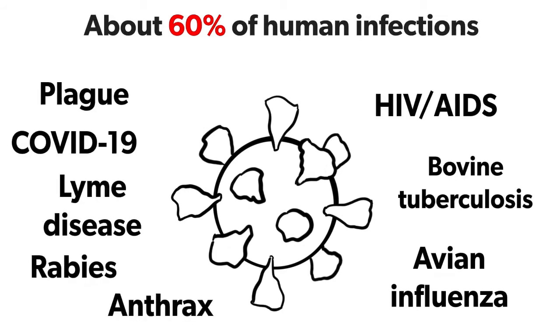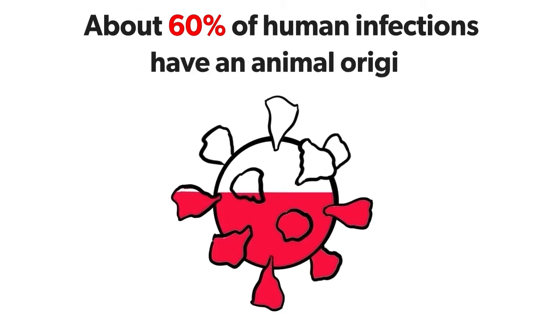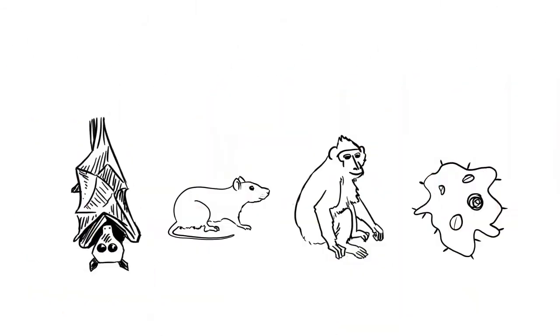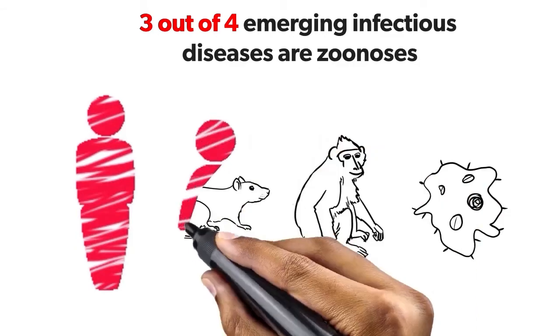About 60% of human infections have an animal origin. Three out of four emerging infectious diseases are zoonoses.